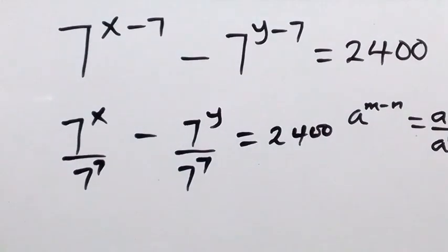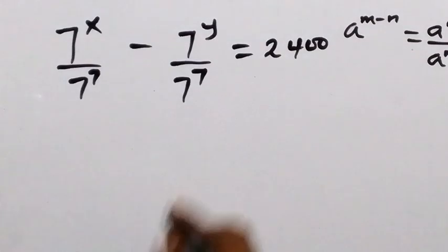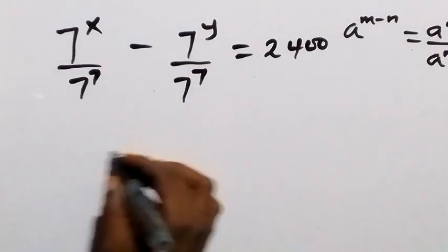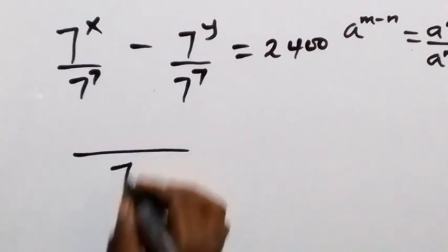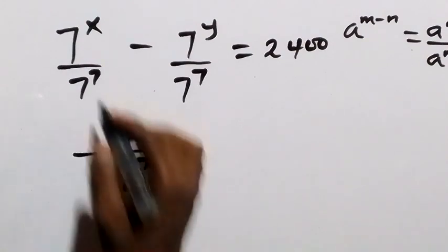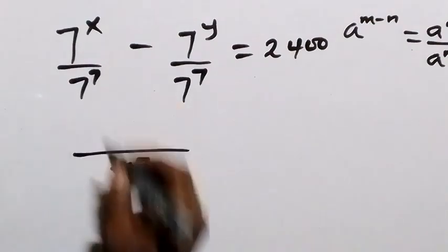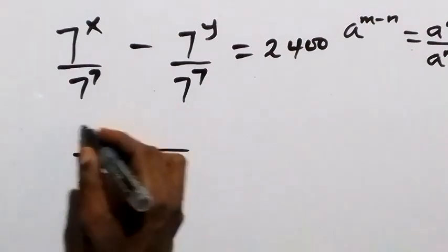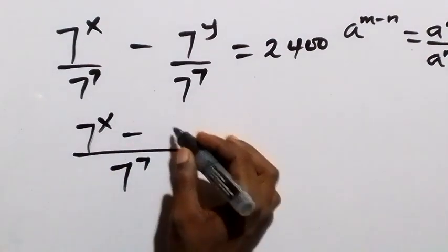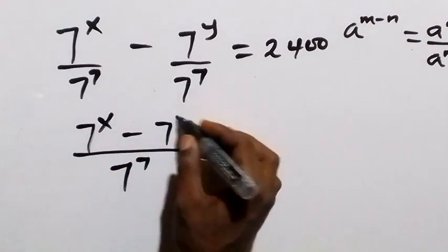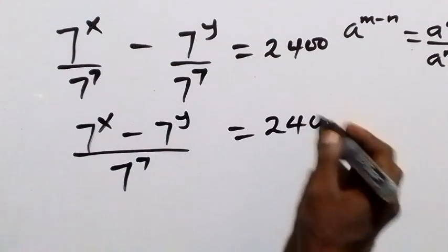In the next step, we find the LCM on this side, and the LCM here is 7 raised to power 7. So 7 raised to power 7 goes into 7 raised to power 7 — that's 1 — times 7 raised to power x, giving 7 raised to power x. Then minus 7 raised to power y, which equals 2400.